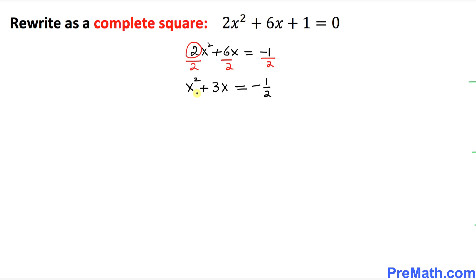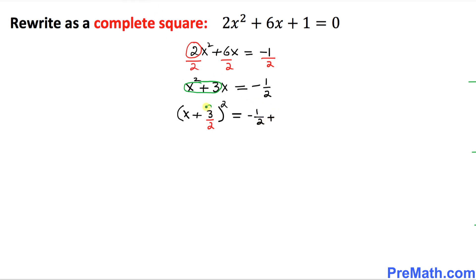Now we want to complete the square on the left hand side. I'm going to put down one parenthesis to the power of 2, and focus on x plus 3 part only. So I'm going to write down x plus 3. The next step is whatever this number is, we are going to divide it by 2. On the right hand side we already have negative 1 over 2, plus — let's focus on this part: 3 over 2. Don't worry about the sign. So I'm going to write down 3 over 2 squared.